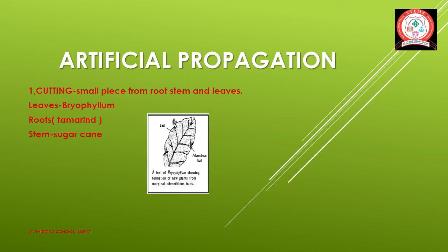The next type is artificial vegetative propagation. It is carried out by four different methods: cutting, layering, grafting, and micropropagation. Artificial vegetative propagation means the vegetative propagation can also be done artificially — man-made methods for vegetative propagation are called artificial methods. In the cutting method, a small piece of any plant organ like leaves, roots, or stem is used for propagation.